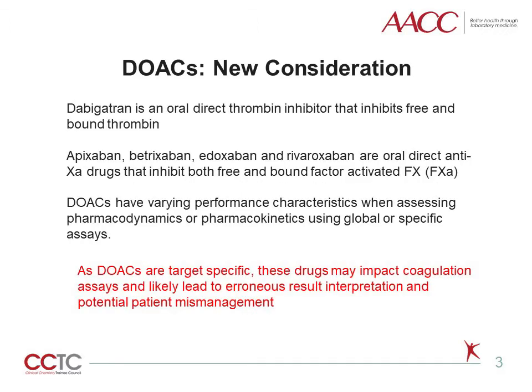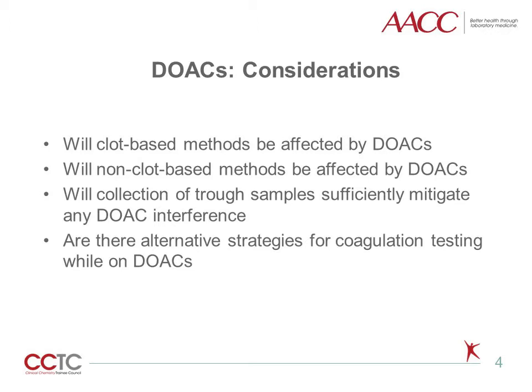In the previous sessions, we provided an overview of DOACs, which include dabigatran, a direct thrombin inhibitor, and the direct anti-Xa DOACs, which include apixaban, betrixaban, edoxaban, and rivaroxaban. We previously described their performance characteristics, including pharmacodynamics and pharmacokinetics, using screening or specific coagulation assays. The new consideration, as DOACs target specific activated factors, the impact of these drugs on other coagulation assays are likely leading to potential erroneous interpretation and mismanagement. As we previously demonstrated, DOACs may affect clot-based assays such as the PT and APTT, but will these observations translate to other clot-based coagulation assays?